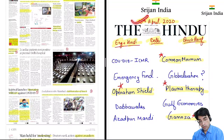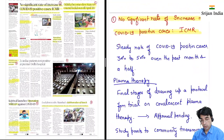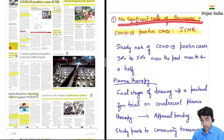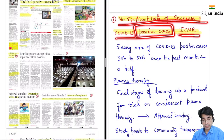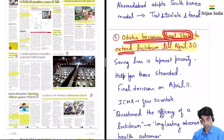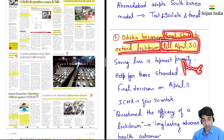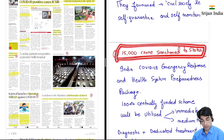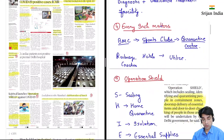So today we are going to read about all these important topics. Pahla hai: no significant rate of increase in COVID-19 positive cases — yeh baat kahi hai ICMR, Indian Council of Medical Research, ne. Second article: Odisha becomes first state to extend lockdown till April 30. Punjab bhi kaafi extend kar diya hai, first of May I think. Then 15,000 crore sanctioned to states to prepare for COVID-19.